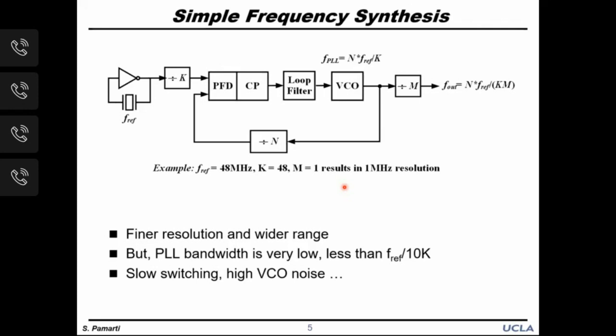Using a large output division ratio M can also improve resolution; however, the output frequency range is greatly reduced. So the bottom line is that using dividers before or after the PLL allows finer resolution, but only at the expense of frequency range, higher noise, and other trade-offs that are not particularly desirable.